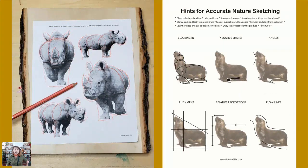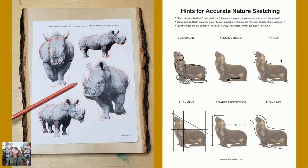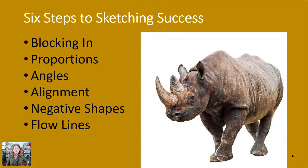Now that we've really looked at the anatomical structure and understood what they look like underneath, in their skeleton and all the joints and angles of their bones — that can really help us. Here's an example looking at those white rhinos: the first thing I was doing was looking at those basic shapes and blocking them in. I have six steps to sketching success showing an example of a sea lion, but it's the same with any animal — first block in your basic shapes of circles, squares, and rectangles; think about the negative shapes; think about the angles; think about flow lines, relative proportions, and alignments.